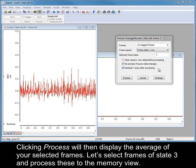Clicking Process will then display the average of your selected frames. Let's select frames of state 3 and then process these to the memory view.